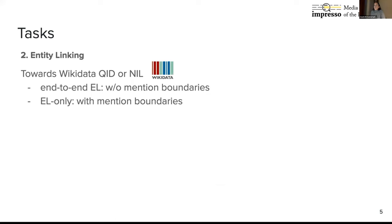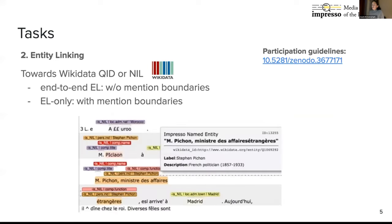The second task is entity linking, where we ask systems to link entity mentions to Wikidata QIDs, or NIL in case the entity is not present in the database. Again, there were two settings, kind of easy and difficult. As the same example shows, Mr. Pichon has been linked to the QID in Wikidata of Stéphane Pichon, a French politician.